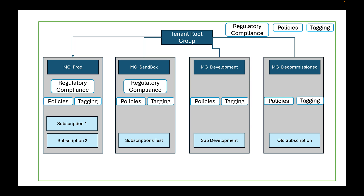If you have certain things at the tenant root group, that doesn't mean you can't also apply them at lower levels. For MG prod, you can have a different regulatory compliance — so if you did NIST 853 at the tenant root group, you can apply another one at MG prod, like an ISO 27000 or HIPAA. You can also have other policies and tagging germane to that management group, and subscriptions within it would follow and adhere to that regulatory compliance, policies, and tagging.